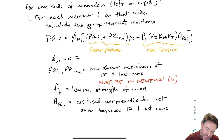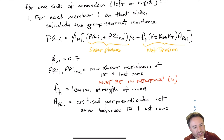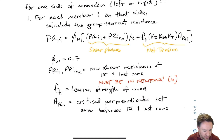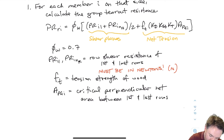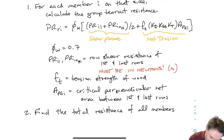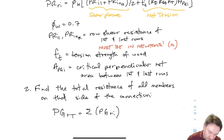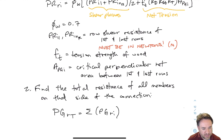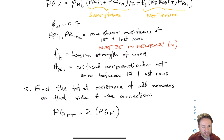f_t is our tension strength of wood, obtained from standard tables. A_pgi is the critical perpendicular net area between the first and last rows — basically the area between the bolt holes across those first and last rows. That gives P_gri, the group tear out resistance for member i. If I have multiple members on that side of the connection (e.g., a three-member connection), I add them all up to get the total P_grt.